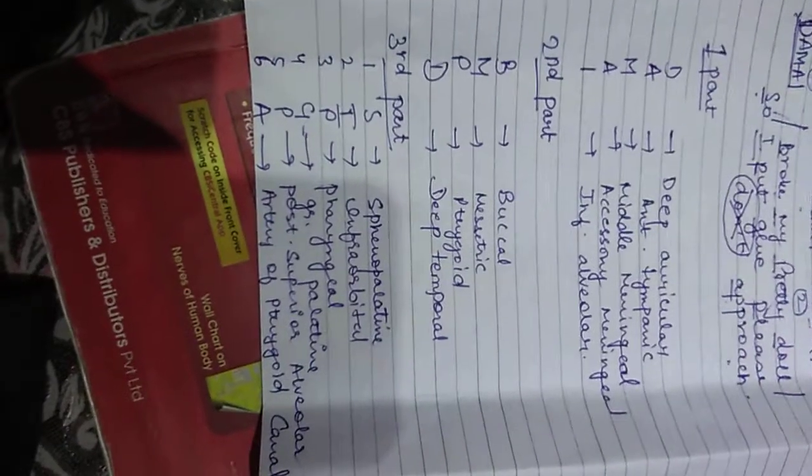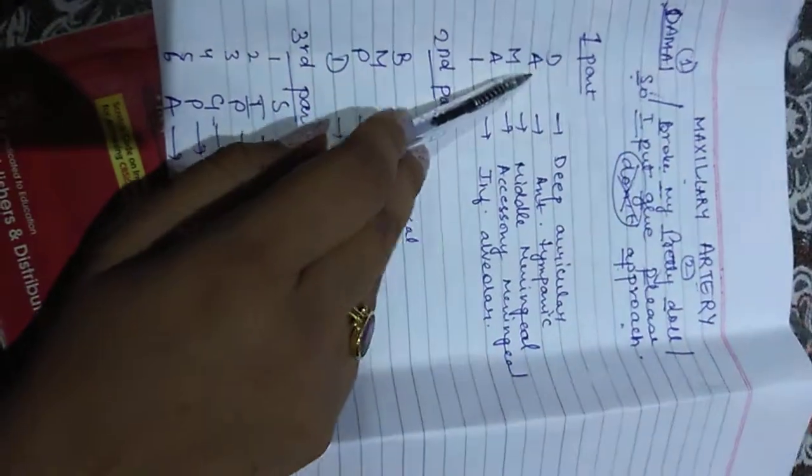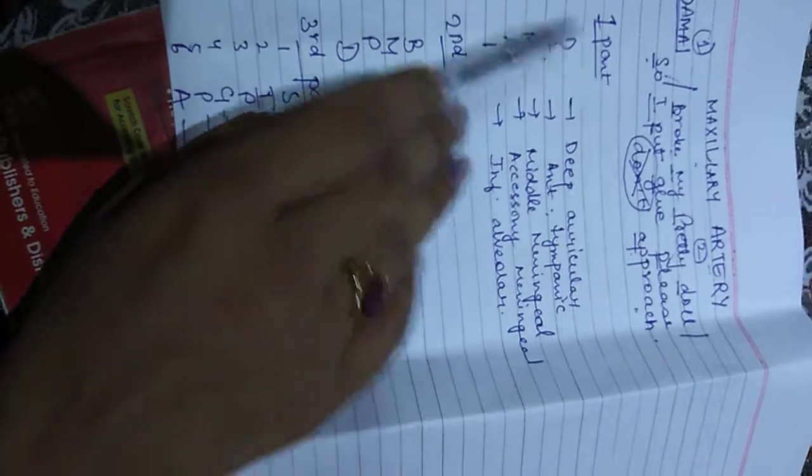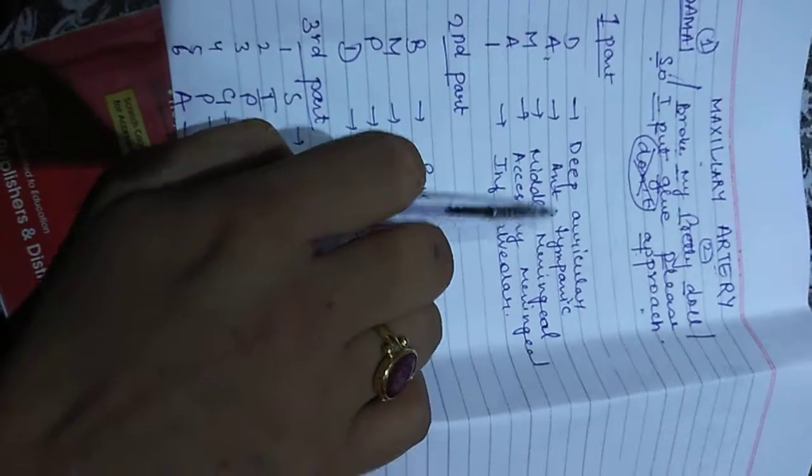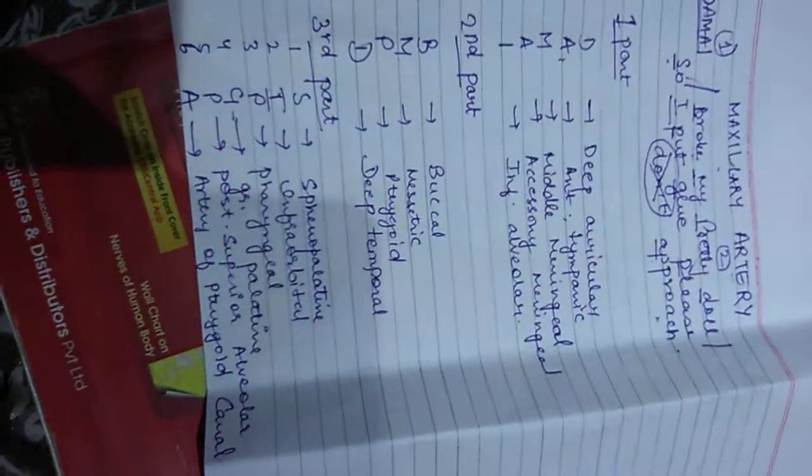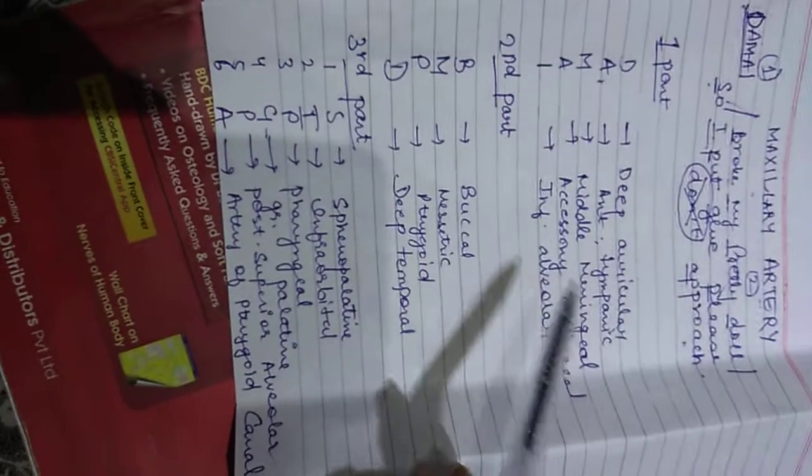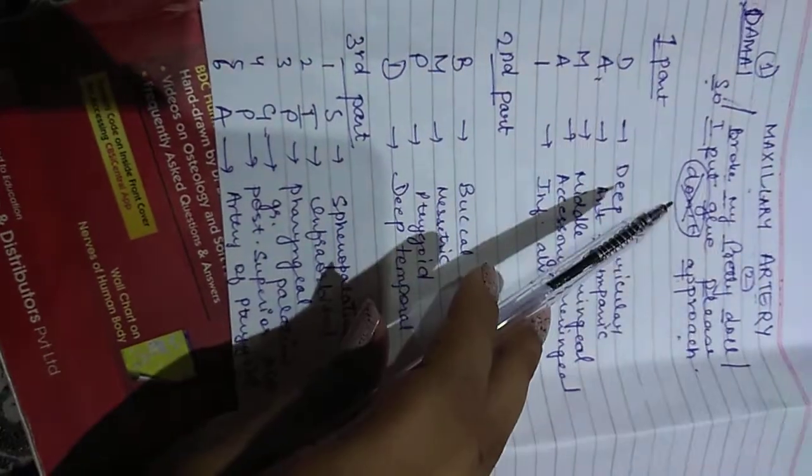So now I have just written the branches here of the maxillary artery to make you understand and save your time. So D here stands for deep auricular, A stands for anterior tympanic, M stands for middle meningeal, A stands for accessory meningeal, I stands for inferior alveolar. So they were the five branches of the first part of the maxillary artery.